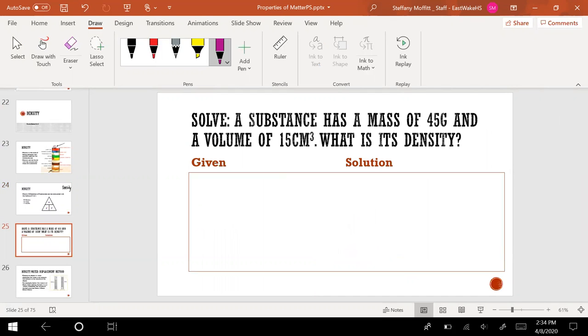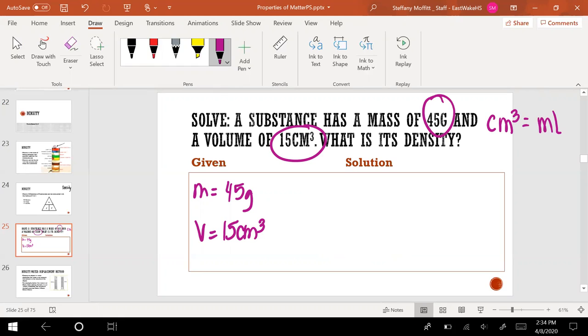So we're going to do an example together. A substance has a mass of 45 grams, so there's your mass. Mass equals 45 grams. And it has a volume of 15 centimeters cubed. I just want to put out there for the record, centimeters cubed is the exact same thing as milliliters. And it wants to know what is the density.